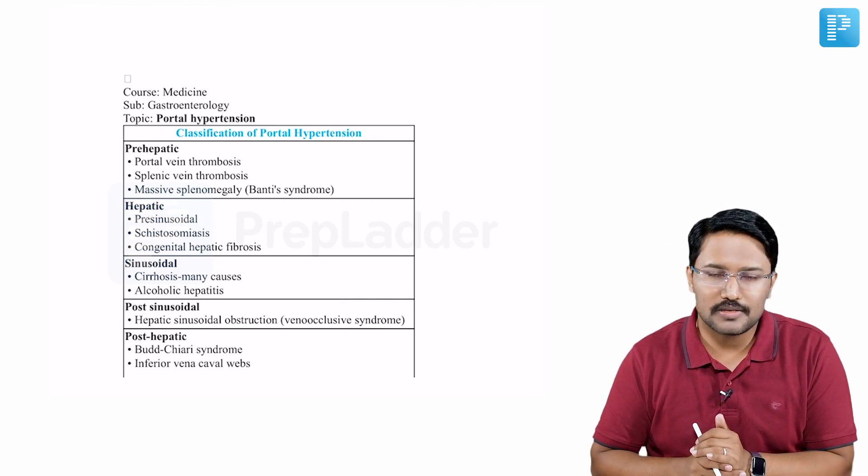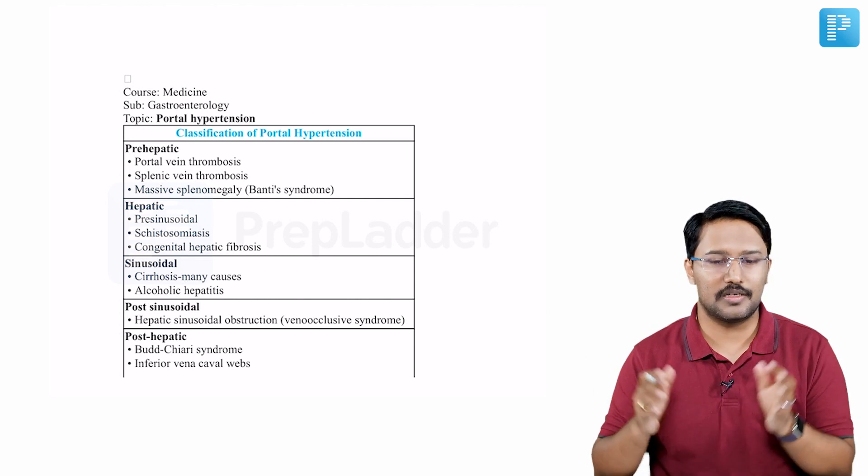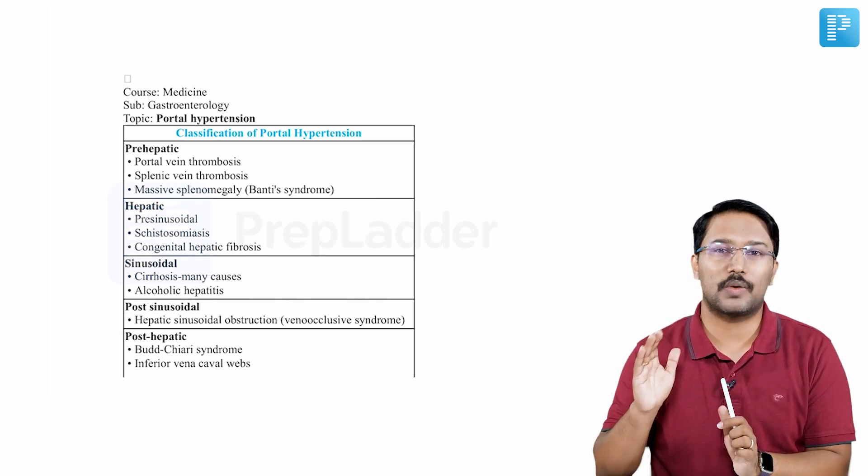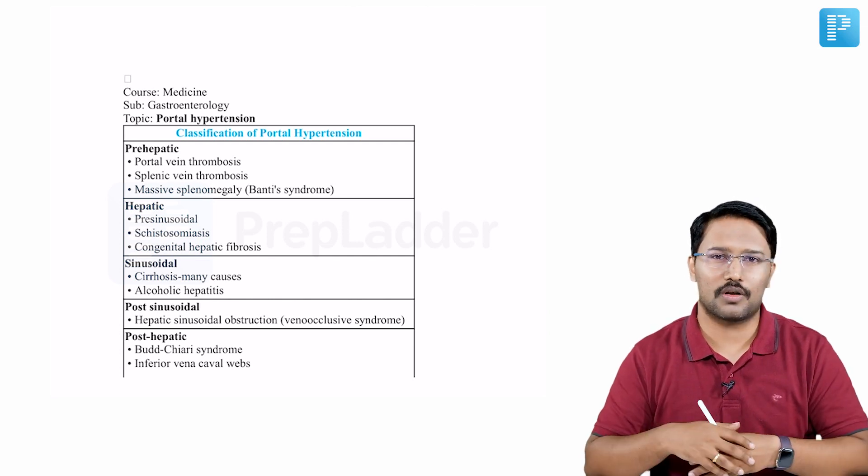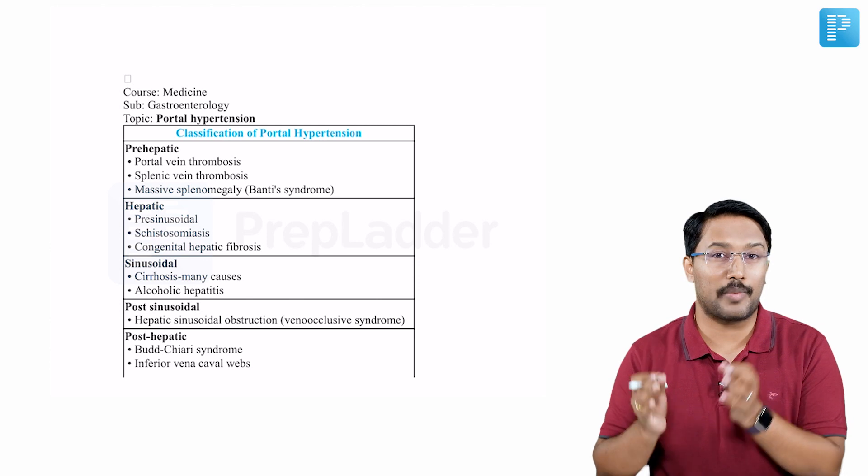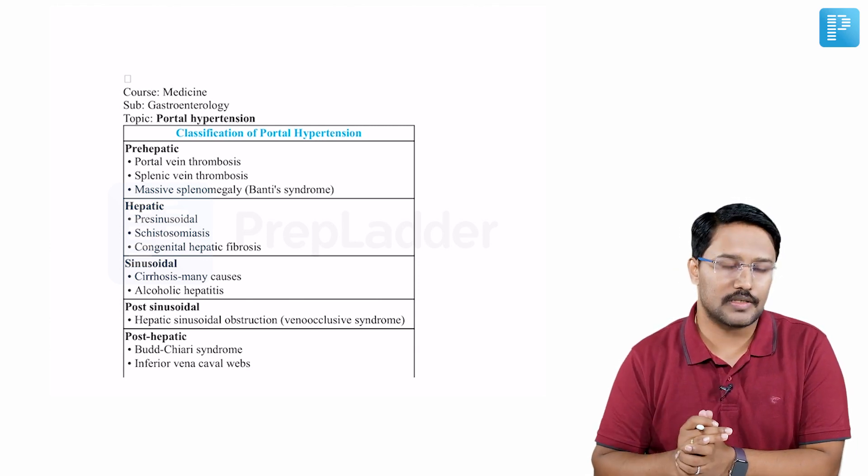Those of you who are not aware of what these treasures are - treasures are small files where a lot of information is condensed and made available at one place so that you can quickly revise. For example, classification of some diseases, staging of tumors, causes of diseases, management protocols, or algorithms. They are summarized so that you can quickly revise them.